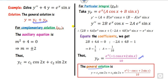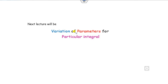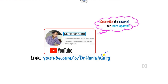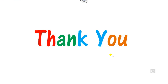This is how you solve the method of undetermined coefficients when there are trigonometric functions on the right-hand side. We will next see the method of variation of parameters for finding the particular integral — another method alongside undetermined coefficients. Follow the link for more videos. Best of luck, students — happy learning!